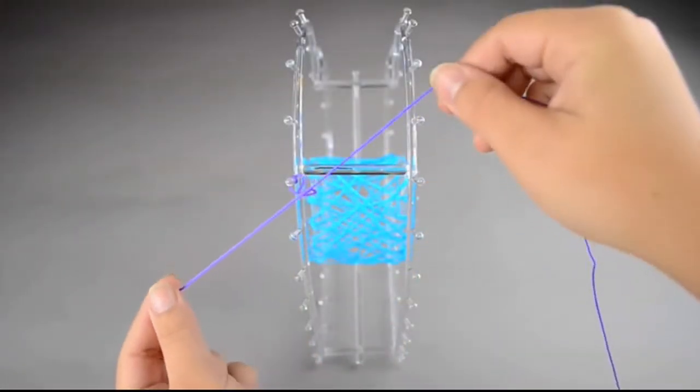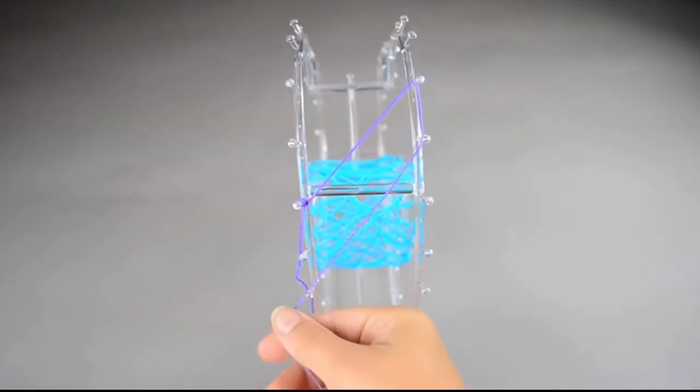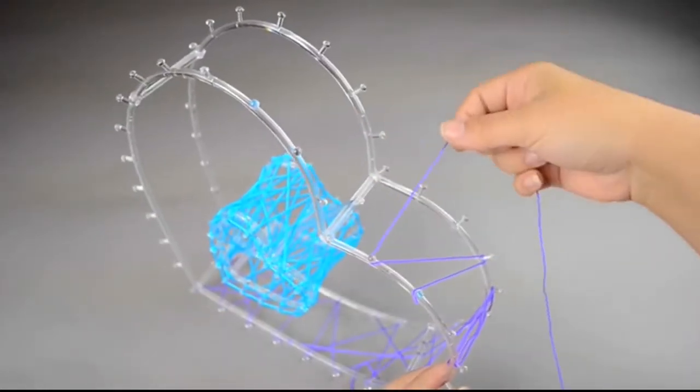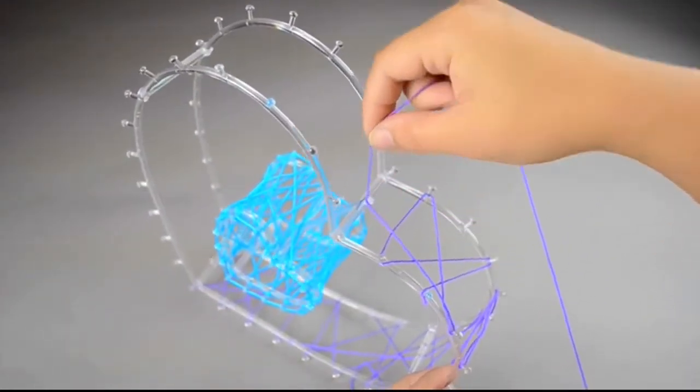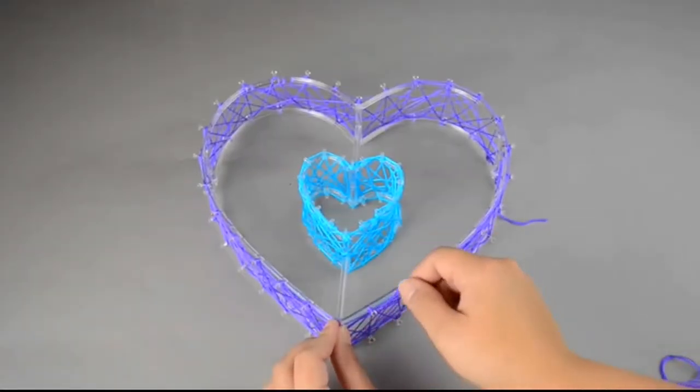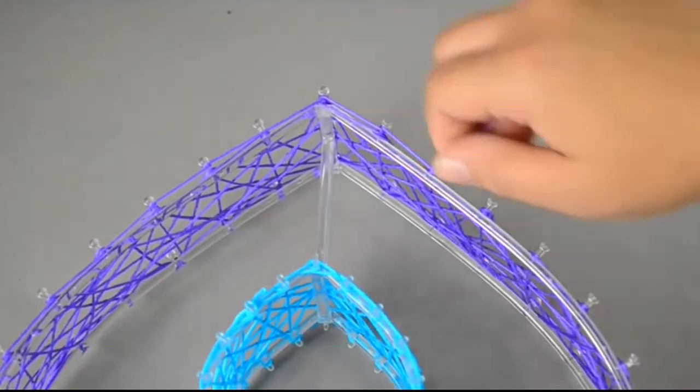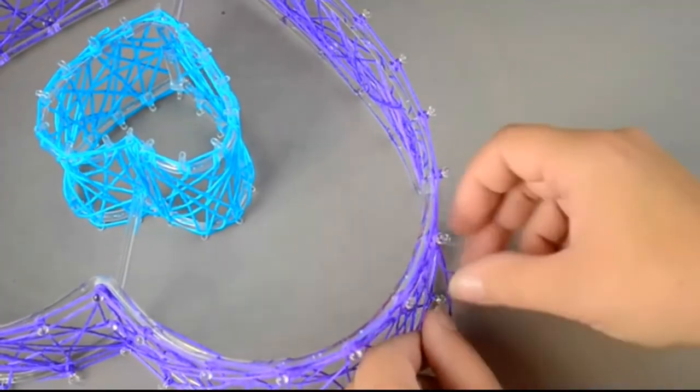Knot the purple embroidery thread onto any peg on a large heart. Wrap the thread from a peg on one large heart to a peg on the other large heart. Do not wrap tightly or the plastic hearts will bend. Wrap thread around the perimeter and finish with a knot.